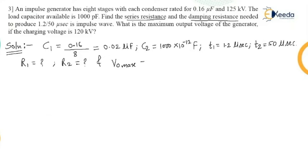And maximum output voltage. So I just represent it as Vomax question mark. The formula which we have is T1 is equal to 3 into R1 into C1 C2 upon C1 plus C2.